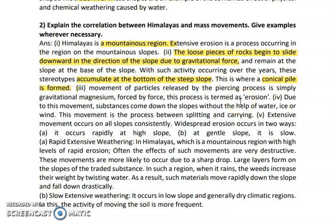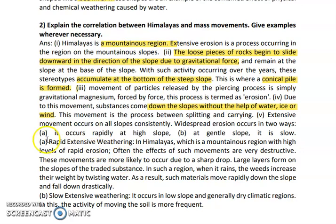This type of process is called erosion — a gravitational process where material is transported from one place to another. Due to this movement, substances come down the slope without the help of water, ice, or wind. Wherever there is a slope, only the slope with gravitational force is enough to bring materials down. Extensive movement occurs in the slopes consistently. Erosion occurs very rapidly on high slopes, and in the case of Himalayan mountains you can see rapid erosion.